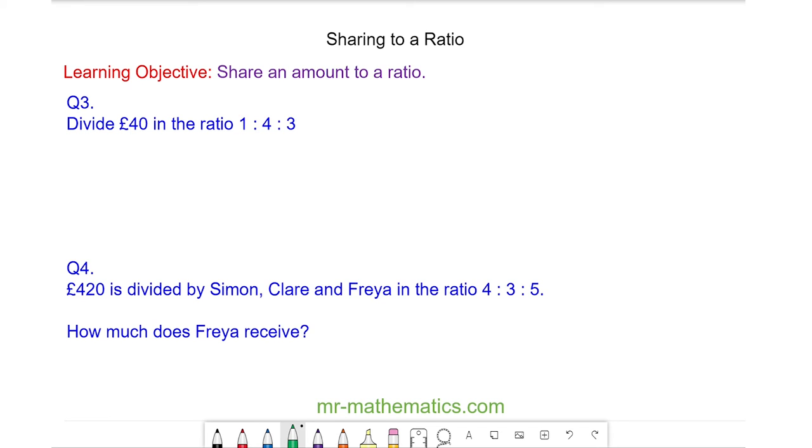Okay, in question three we have £40 and we're sharing in the ratio of one to four to three. So the total shares is the sum of the three, which is eight.